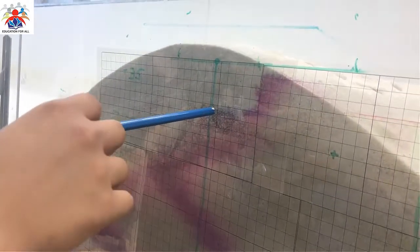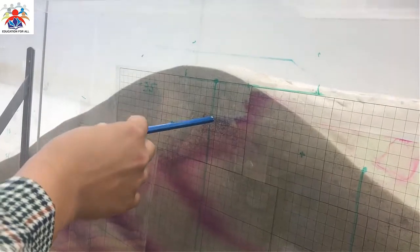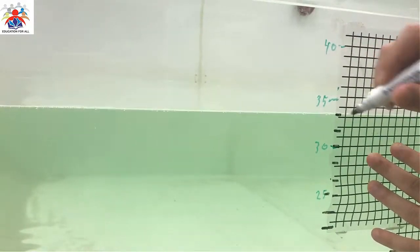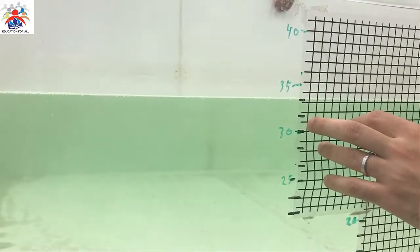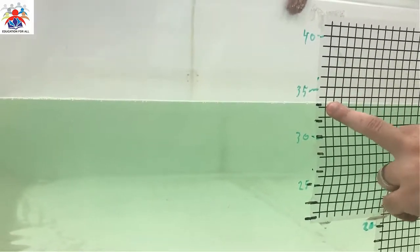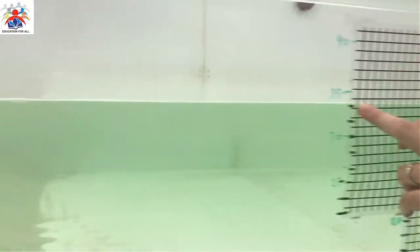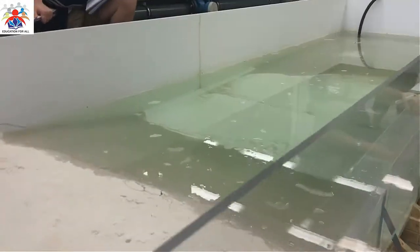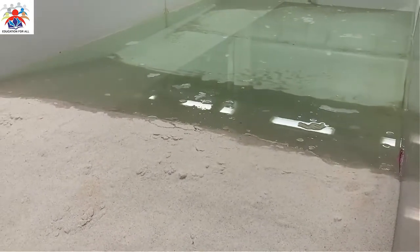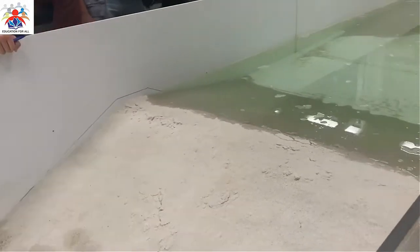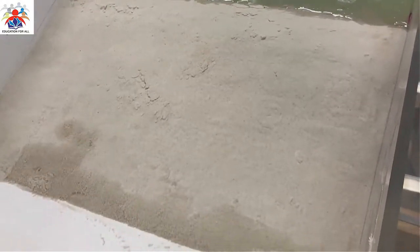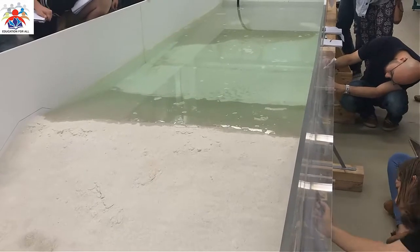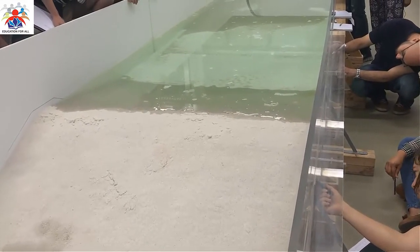The seepage line level is around 30 centimeters. At 18 minutes we have 33.2 centimeters — our dike is about to break. Water is almost on top of the dike and the dike is about to break, as you can see here.